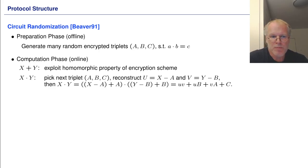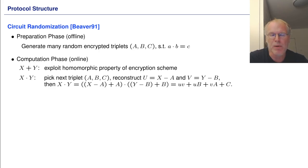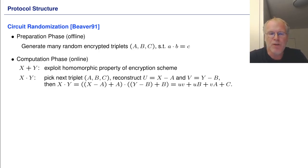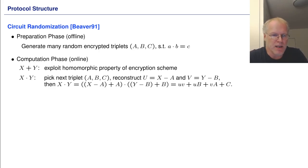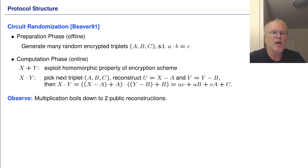We employ circuit randomization by Beaver, which means that in some preparation phase, independent from the concrete circuit, the parties prepare a bunch of triples (A, B, C). A triple (A, B, C) consists of three encryptions where the plaintext of the first two encryptions multiply to the third. In the computation phase, for multiplication of two encrypted values X and Y, the parties pick the next triple (A, B, C) and decrypt X minus A and Y minus B. One can see that the product X times Y can be written as a linear combination of the ciphertexts A, B, C, which can be computed non-interactively. So multiplication boils down to two public reconstructions.